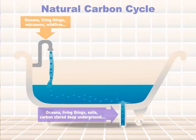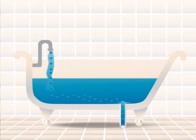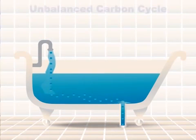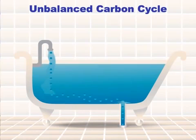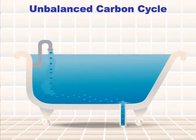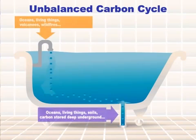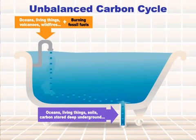But what happens if you add water to the bathtub faster than it can drain away? The tub will fill up and eventually overflow. Something similar is happening in the atmosphere — people are burning lots of fossil fuels and adding carbon dioxide to the atmosphere faster than it can be removed. So the atmosphere is getting overloaded with carbon dioxide.